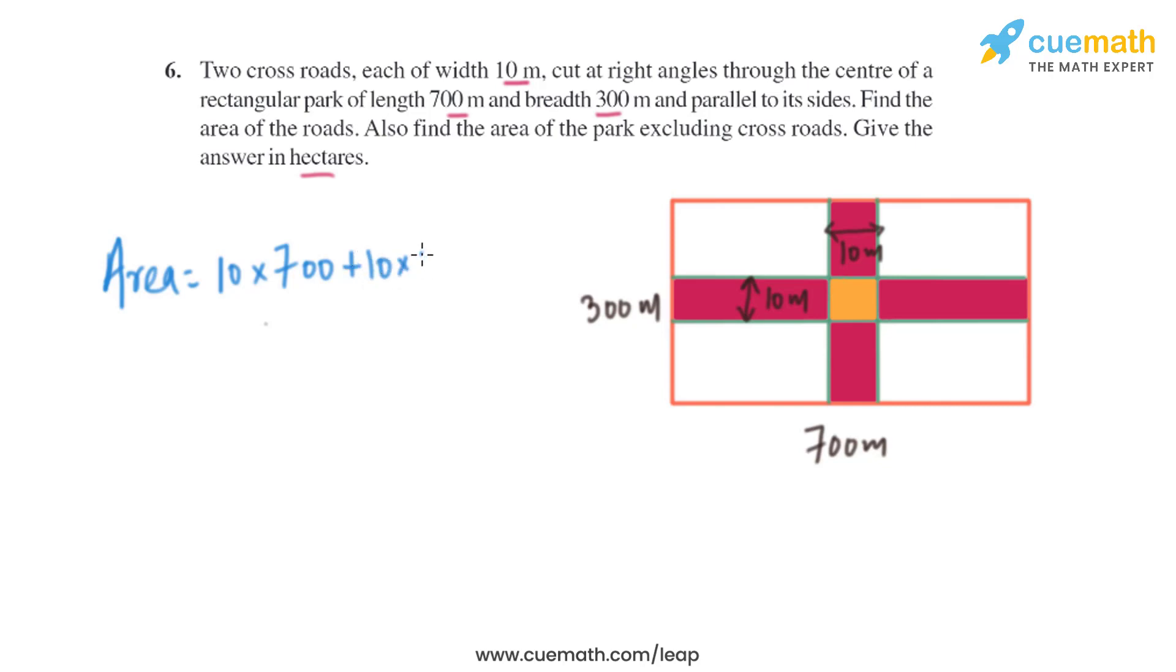As the yellow portion is counted twice, we subtract it once. Its area is 10 × 10. So on solving this, we get 7,000 + 3,000 - 100, which equals 10,000 - 100.